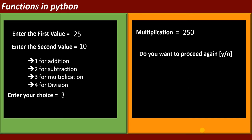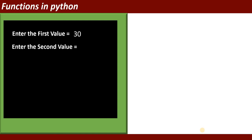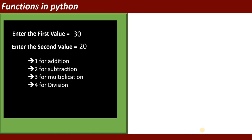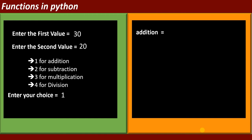Once it performs the required operation, it will display: do you want to proceed again? If the user enters yes, the program should proceed again. Suppose you enter yes — it will ask again for the first value. Entering 30, then second value 20, it displays the four options again. Selecting option one, it shows addition equal to 30 plus 20 equal to 50. It will again ask do you want to proceed again? If no, the program stops.